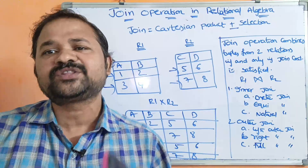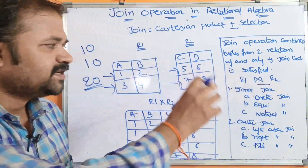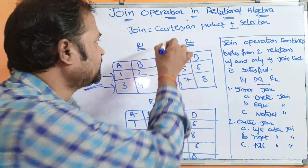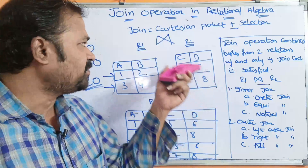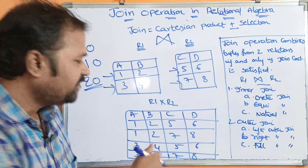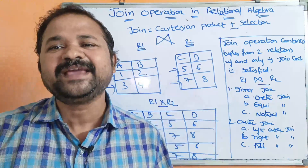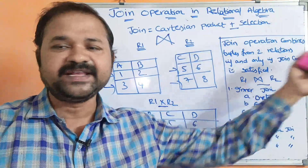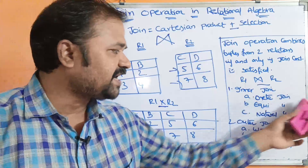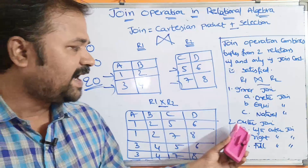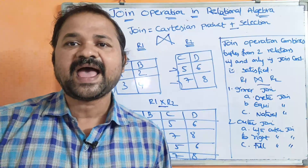Let us see how we can denote the join operation. It is denoted by two triangles facing each other. Whereas cartesian product is represented by a cross mark. We have two types of join. Join means inner join, and the extension of join is called outer join. We have three types of inner join: theta join, equi join, and natural join. The types of outer join are left outer join, right outer join, and full outer join.